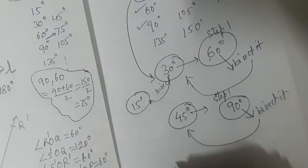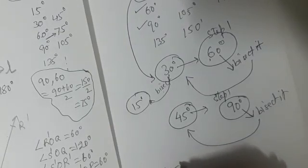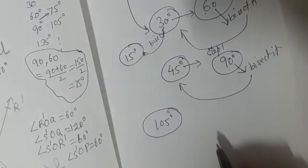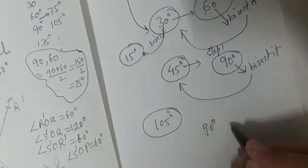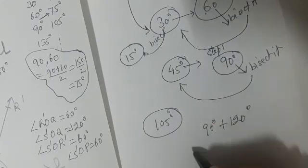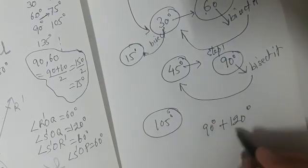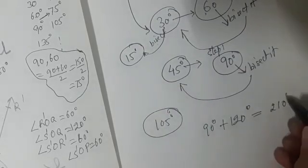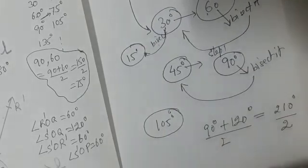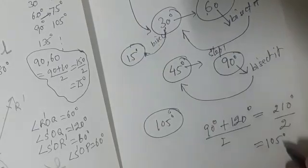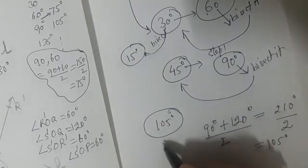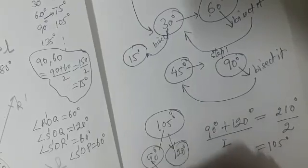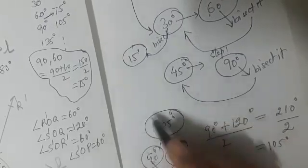Now for 105°: first get 90°, then get 120°. The average is (90 + 120) ÷ 2 = 210 ÷ 2 = 105°. So step 1: construct 90°; step 2: construct 120°; then bisect the angle between them to get 105°.